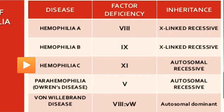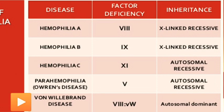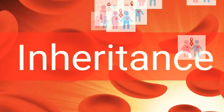Hemophilia C is a mild form due to deficiency of factor 11 and is autosomal recessive inheritance. Parahemophilia is due to deficiency of factor 5 and is also autosomal recessive. Besides these four types, there is another disease — von Willebrand disease — which is due to deficiency of factor 8 (VWF: V for Von and W for Willebrand) and is of autosomal dominant inheritance type.